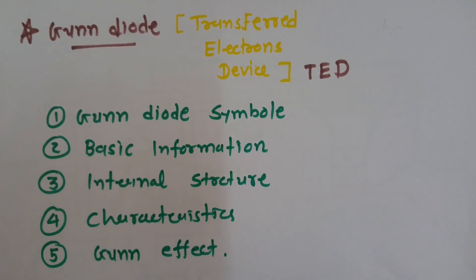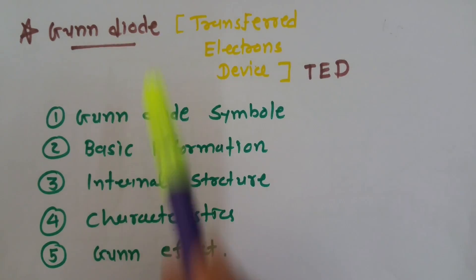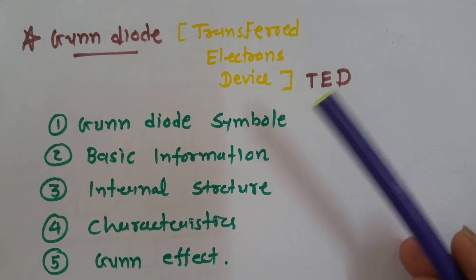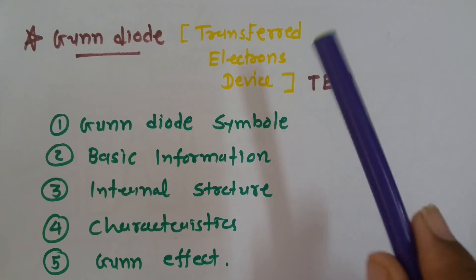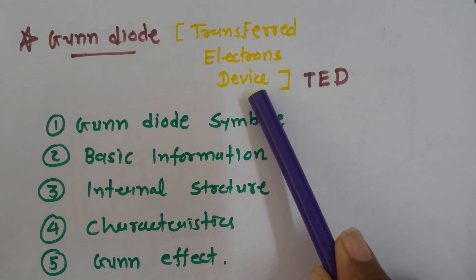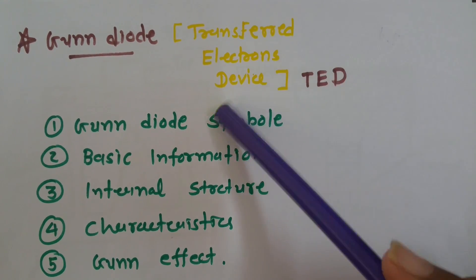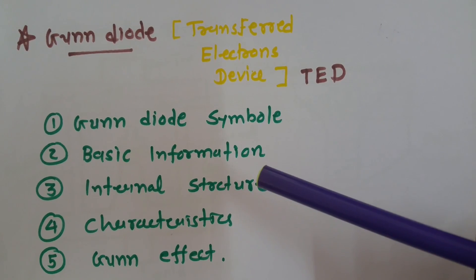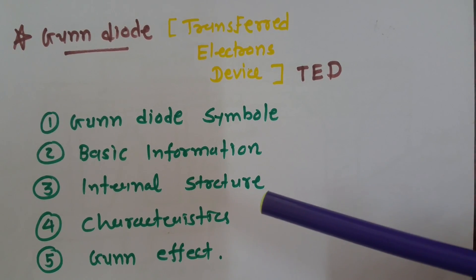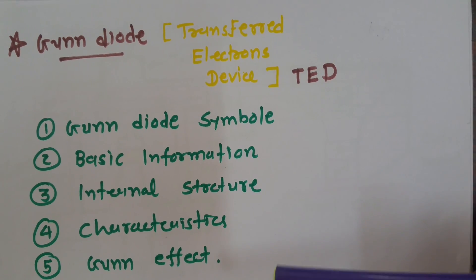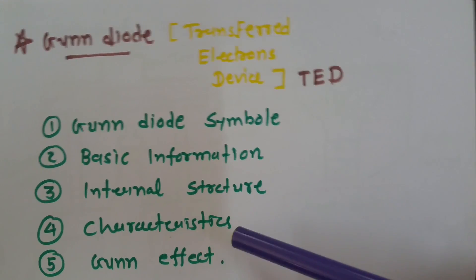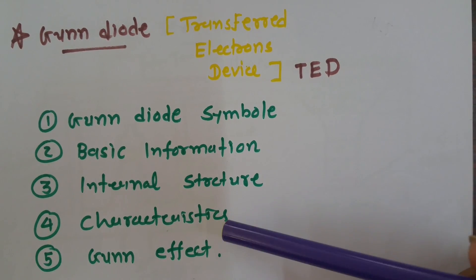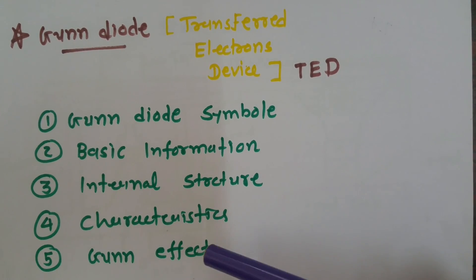In this session, I will be discussing the GUN Diode, also referred to as the Transferred Electron Diode — in short, TED. The session outline covers the symbol of the GUN Diode, basic information, its internal structure, its characteristic, and we will conclude with the GUN effect.